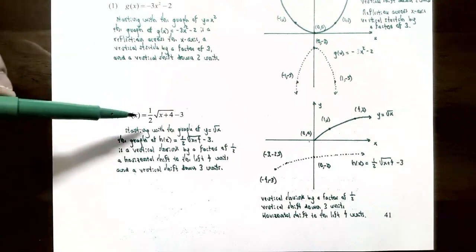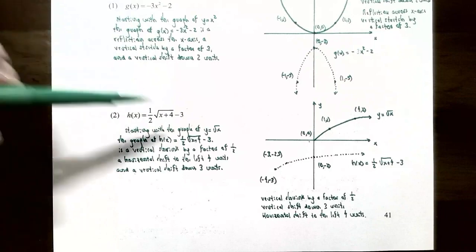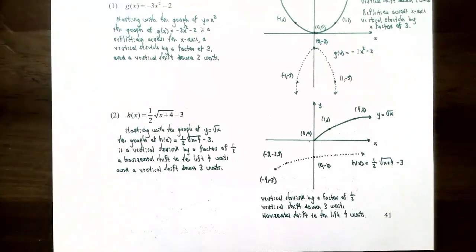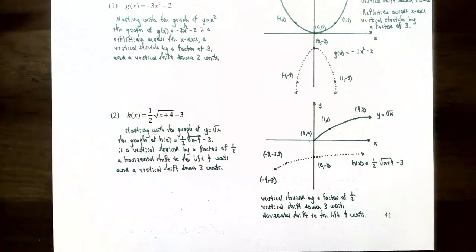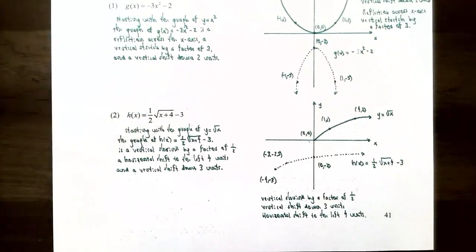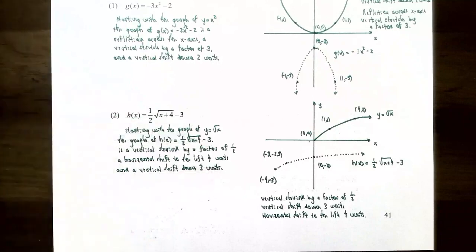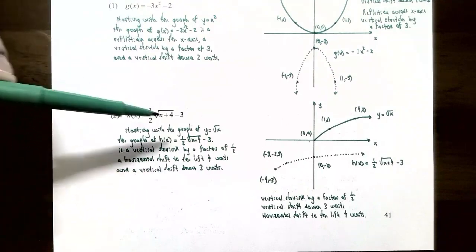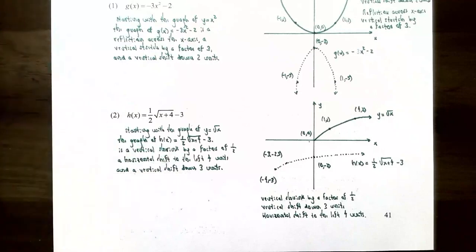Number two, let's graph h(x) = ½√(x+4) - 3, where the plus 4 is inside the square root. We're dealing with the basic function y = √x. It's a vertical shrink by a factor of ½ because we're multiplying the square root function by ½, which shrinks the graph towards the x-axis since c = ½ is less than 1. It's also a horizontal shift left 4 units because of the plus 4 inside the square root, and a vertical shift down 3 units because of the minus 3 outside the square root.